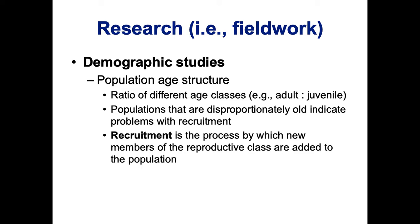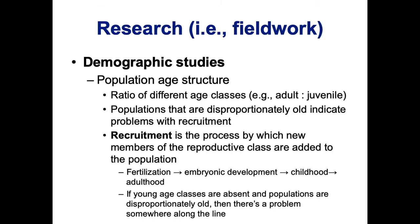Recruitment is the process by which new members are added to the reproductive class in the population. In most cases we have fertilization, embryonic development, and childhood to adulthood. We want to know how many individuals make it to adulthood. If young age classes are absent and populations are almost all old, that means there's some problem with reproduction. You can't automatically tell if it's with fertilization, embryos, or somewhere in the early life stages.